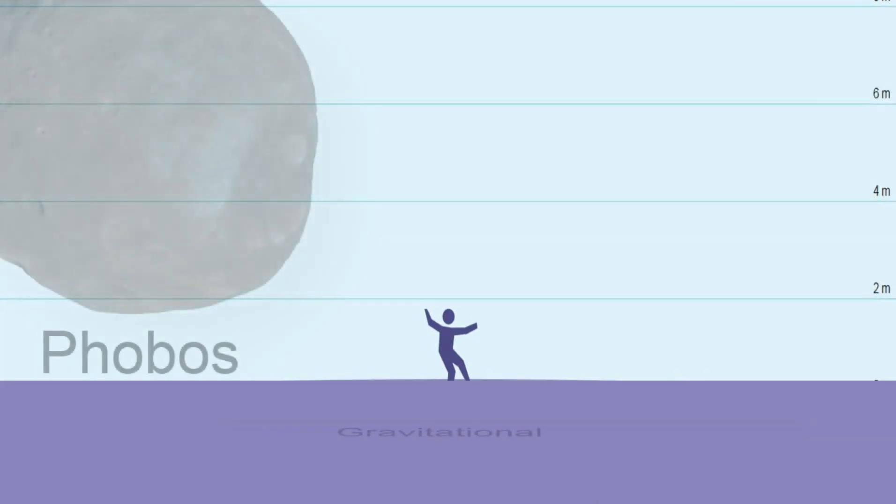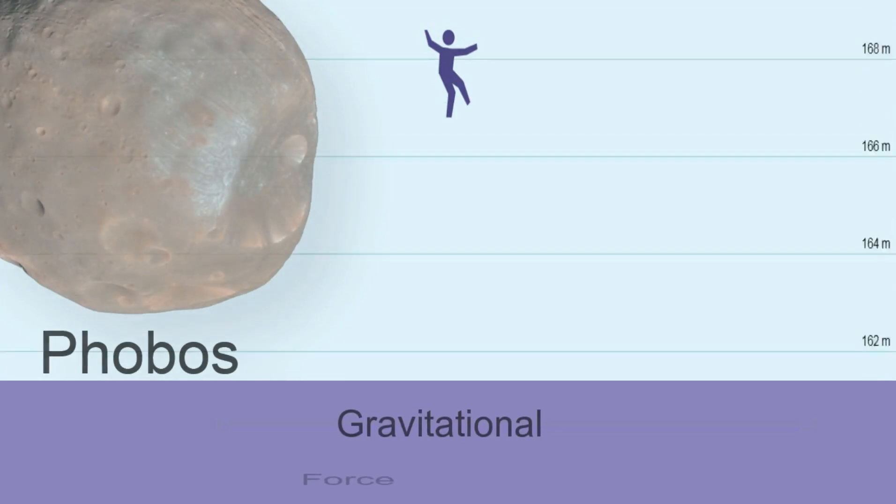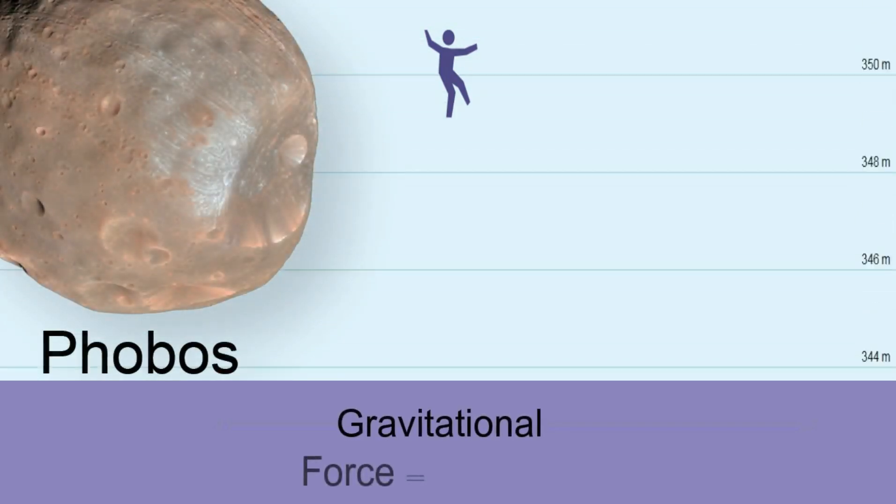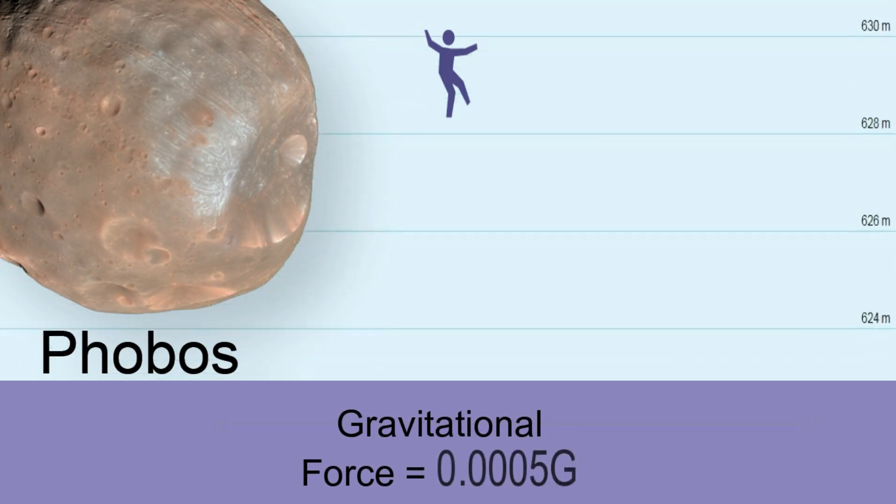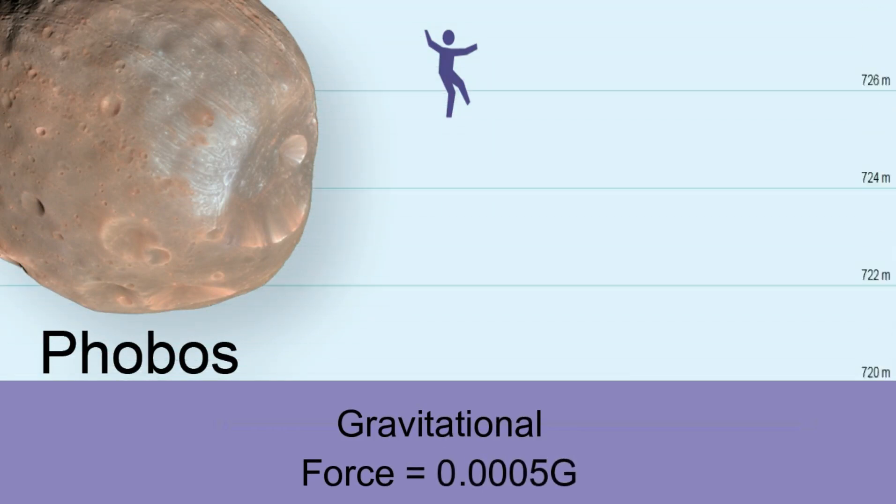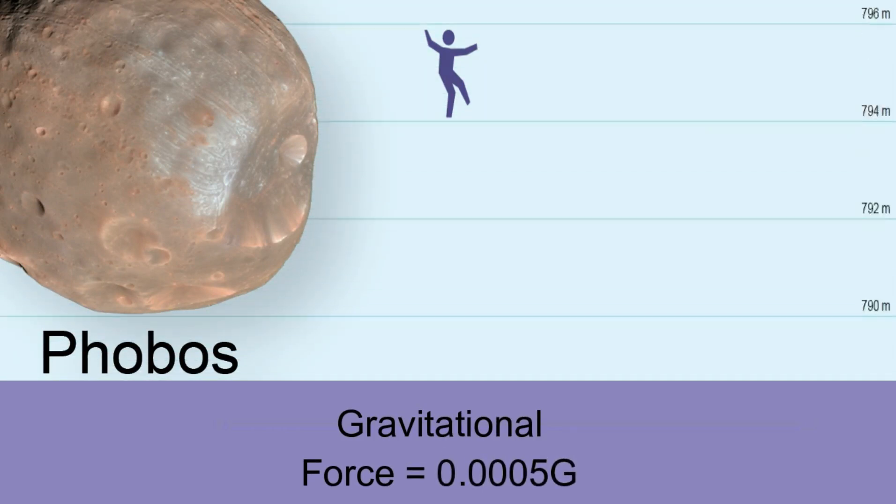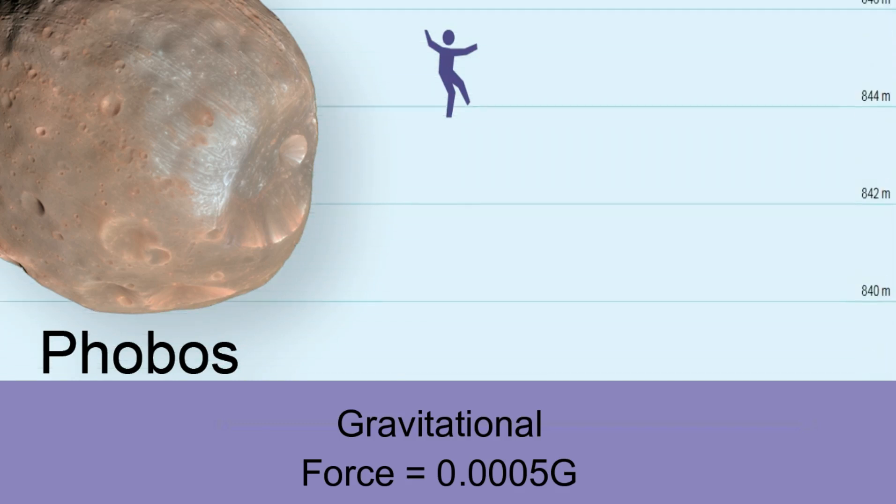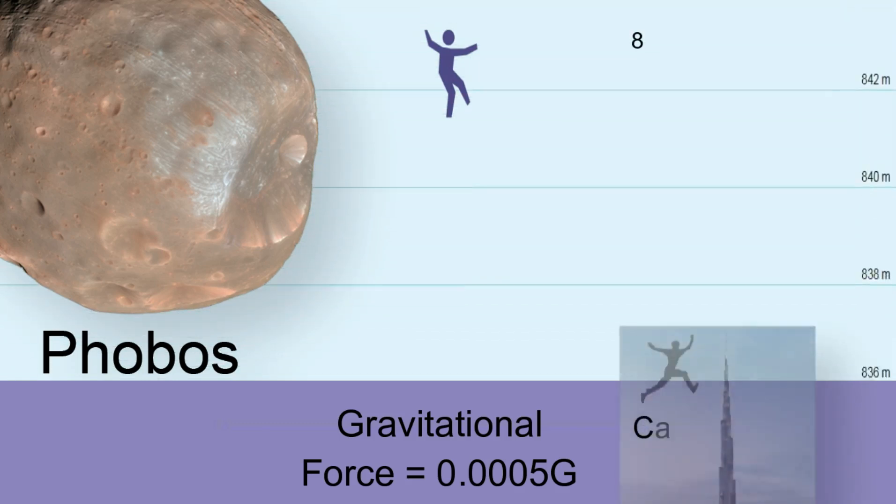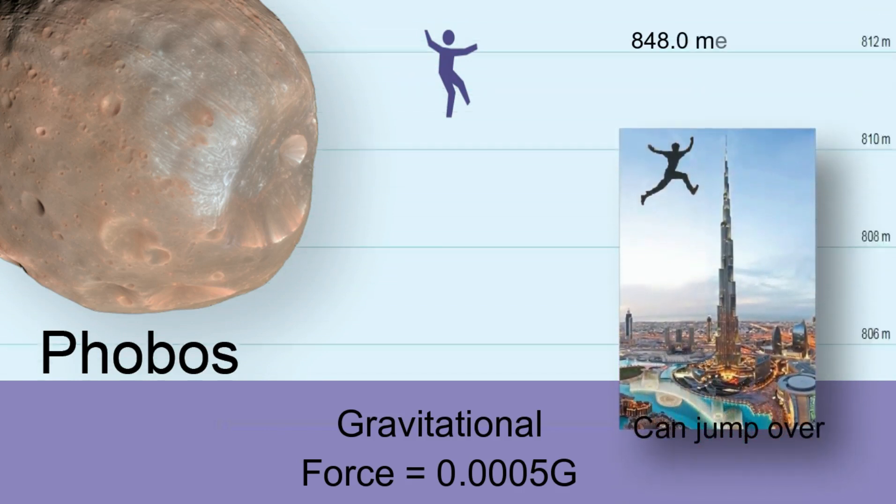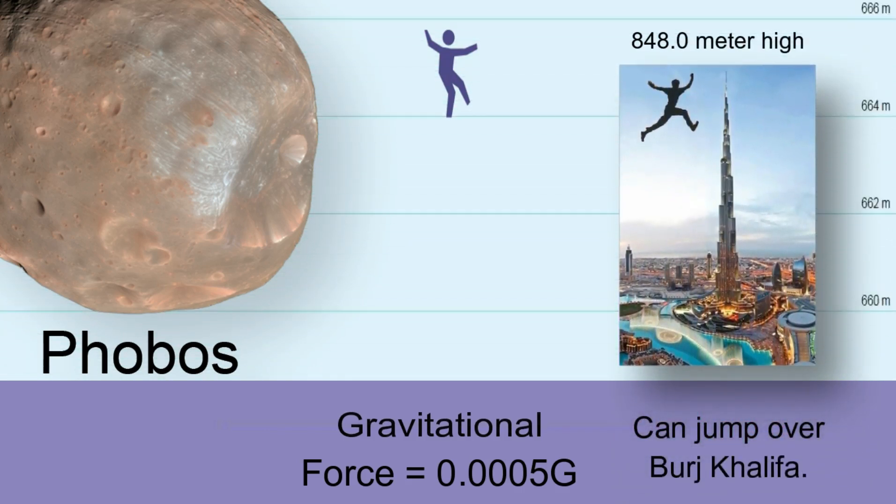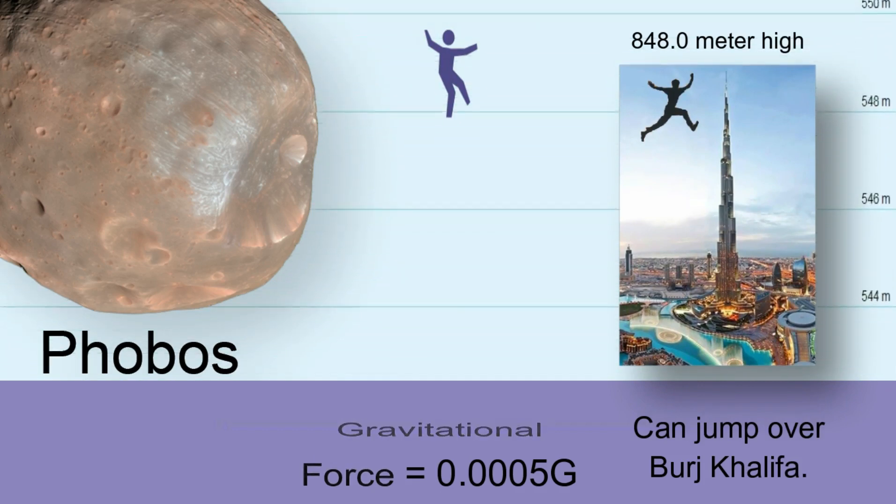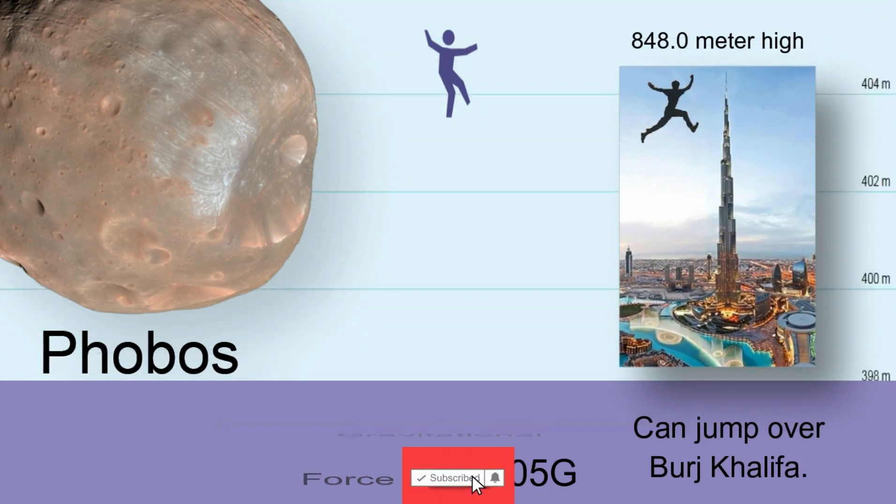Phobos: It is the innermost and largest of the two natural satellites of Mars. Phobos is a doomed moon as it will collide with Mars one day. The gravitational force on Phobos is 2,000 times lesser than the Earth. You can jump as high as 848 meters—it's like jumping over Burj Khalifa, the tallest building in the world. You better have good landing gears to land safely.